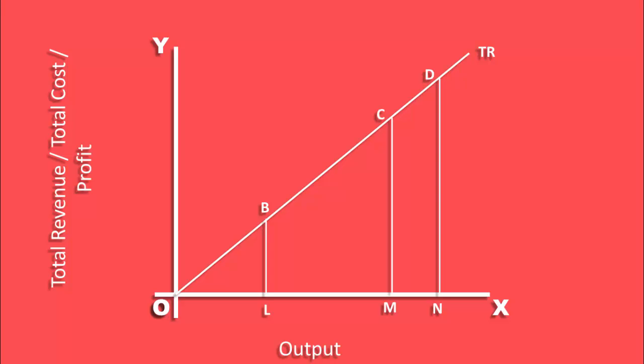Larger the output sold, more is the inflow of total revenue. So, the total revenue curve is one of upward sloping.